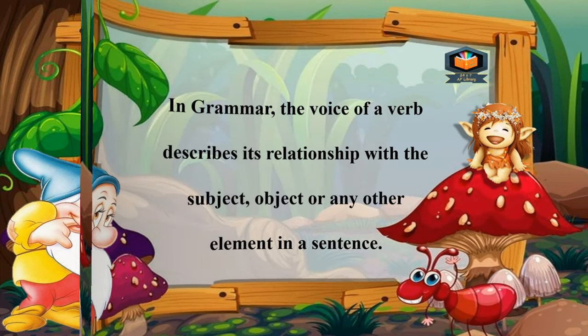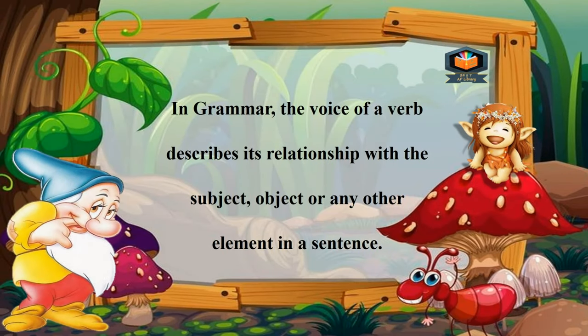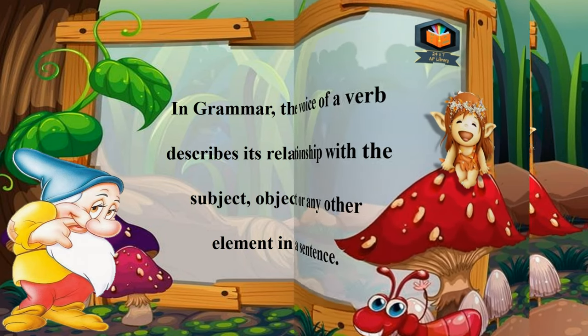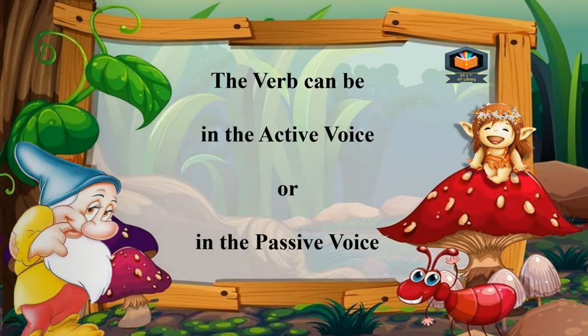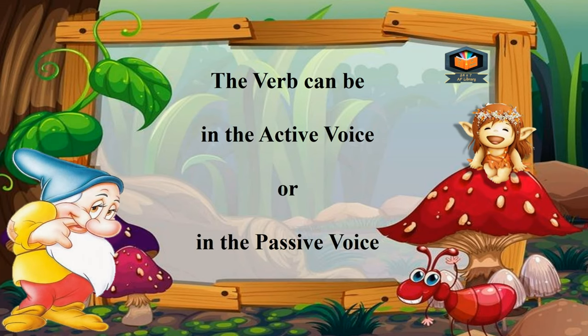In English grammar, the voice of a verb describes its relationship with the subject, object, or any other element in a sentence. The verb can be in the active voice or in the passive voice.